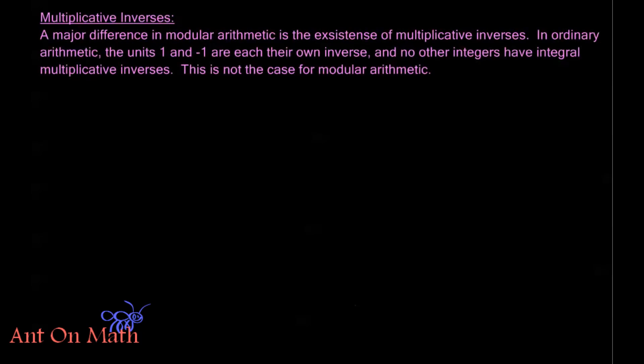A major difference in modular arithmetic opposed to ordinary arithmetic is the existence of multiplicative inverses. In ordinary arithmetic, the units 1 and negative 1 are each their own inverse and no other integers have integral multiplicative inverses. This is not the case for modular arithmetic.